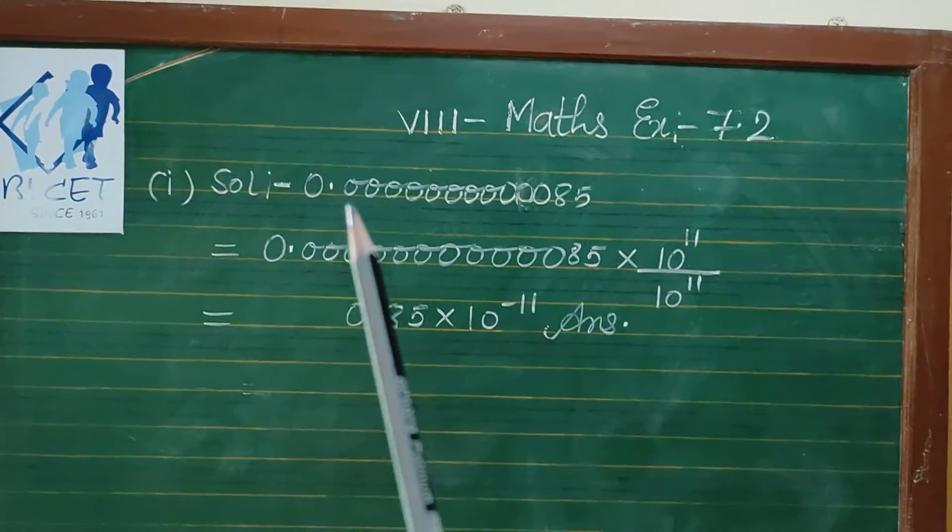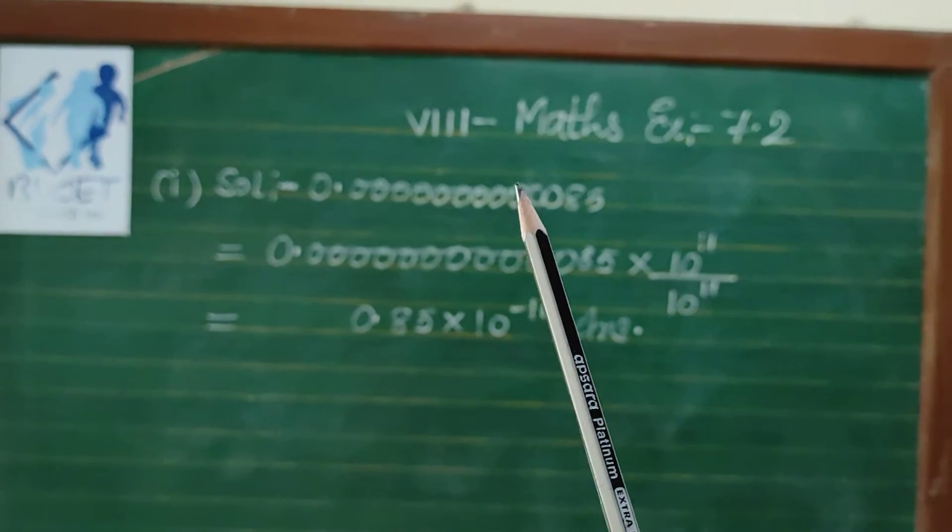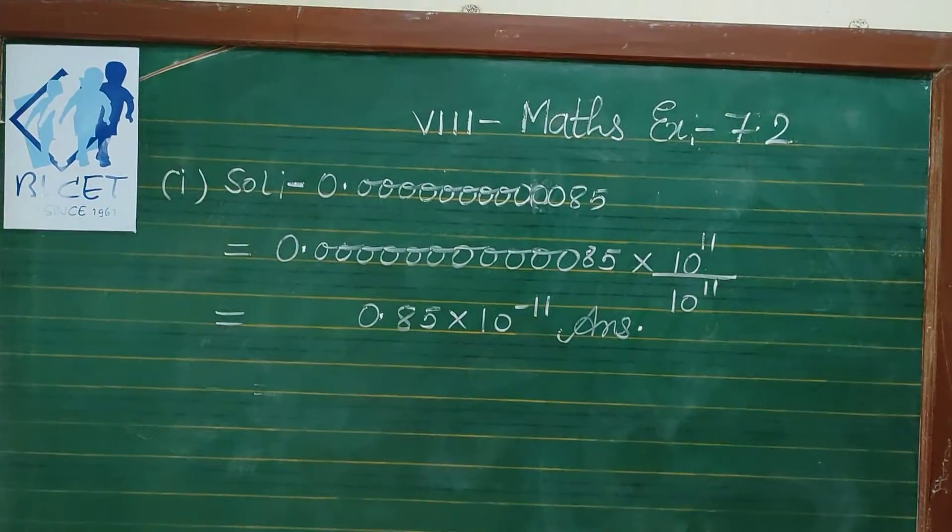You can see here 0.1, 2, 3, 4, 5, 6, 7, 8, 9, 10, 11 times 0 and then 8, 5.